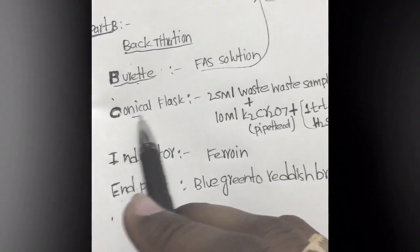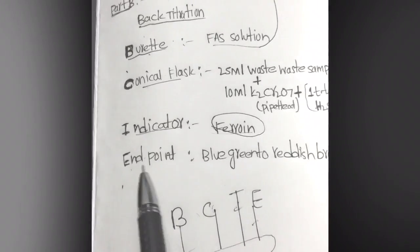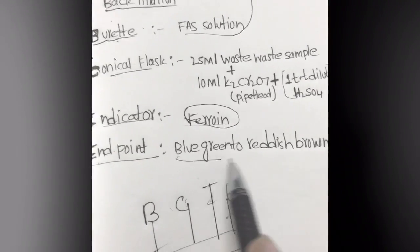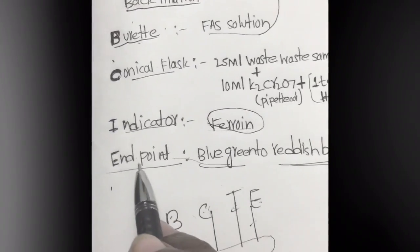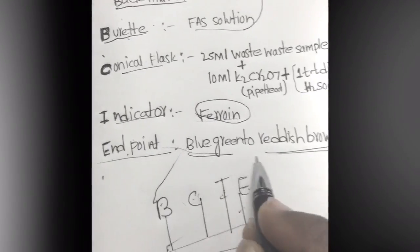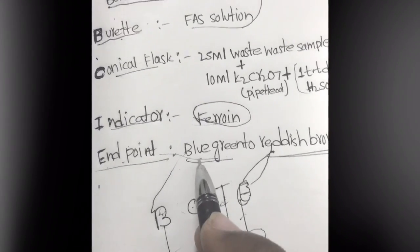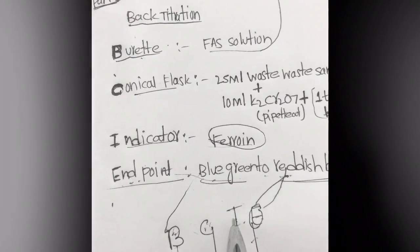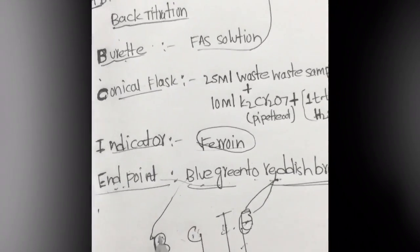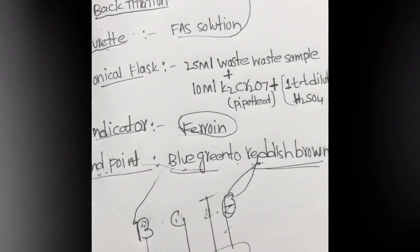The indicator (I in BCIE) is ferroin. The endpoint (E in BCIE) is a color change from blue-green to reddish brown. If you forget the endpoint color, remember B-C-I-E: something starts with B, so blue-green — changing to reddish brown.